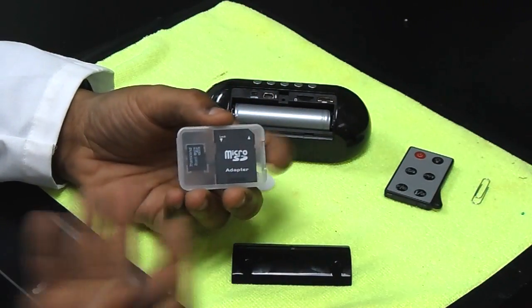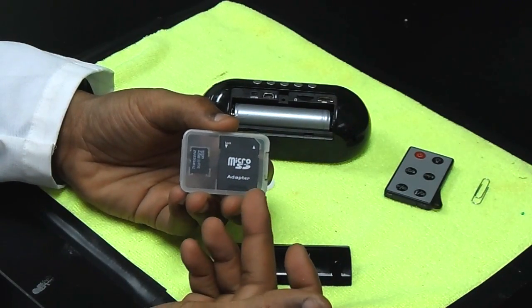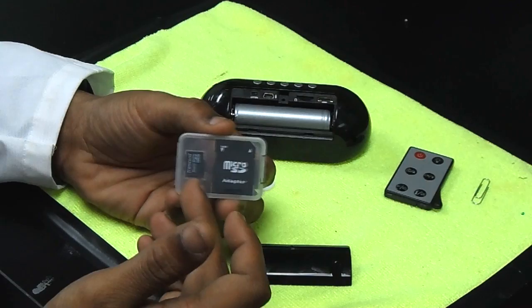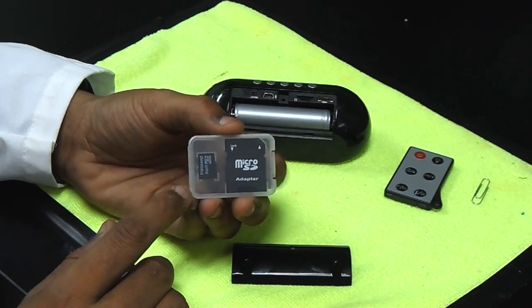When you purchase your microSD card it may come in a form factor just like this with a USB card adapter as well as the microSD card. The only portion that we'll be needing for our clock is the actual microSD card itself.